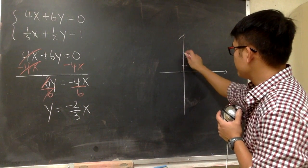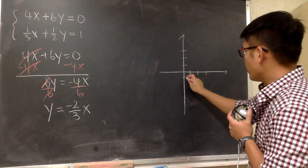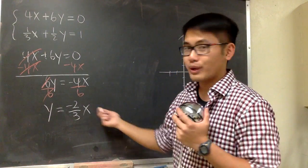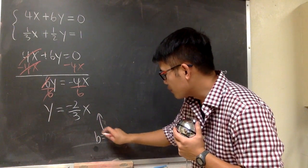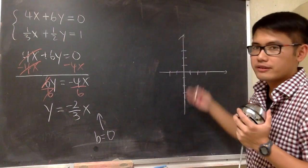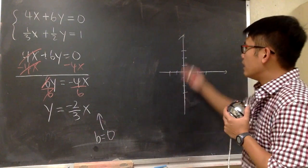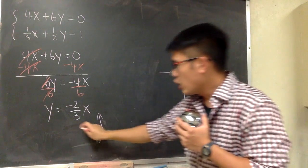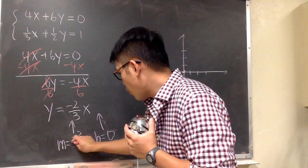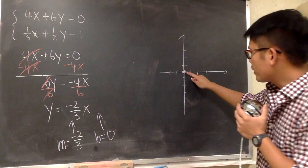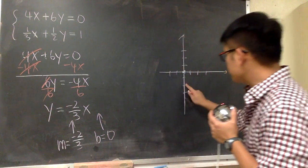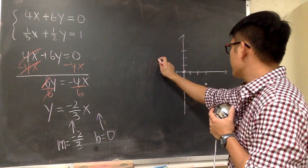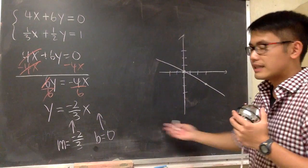Let's set up the graph. The b value here is 0 — we still have a y-intercept, it's just at the origin. So we put a point at 0. From there, the slope is -2/3, meaning we go down 2 and then move to the right 3 times. Connect the dots to get the first line for this situation.